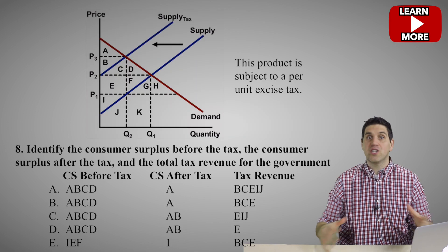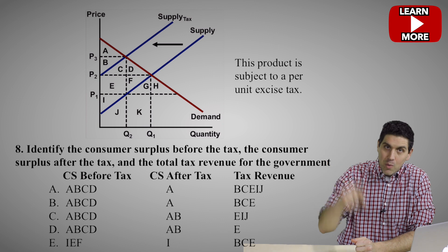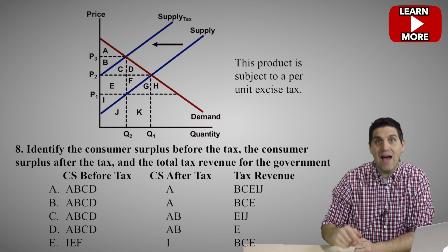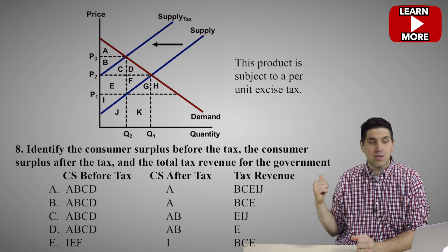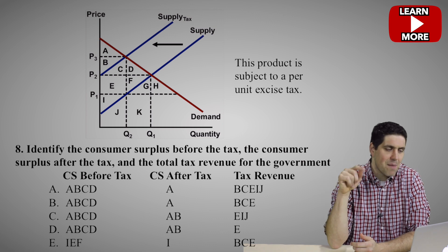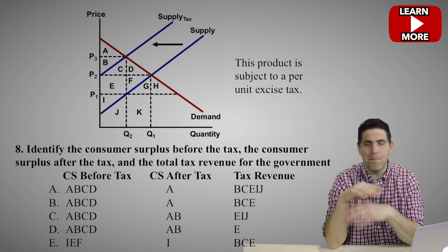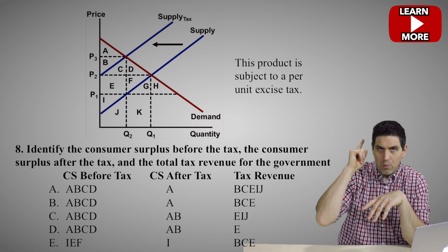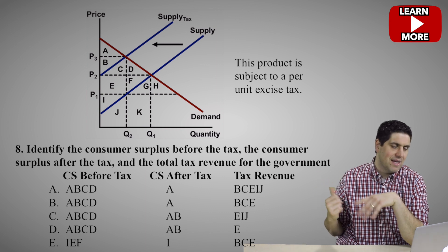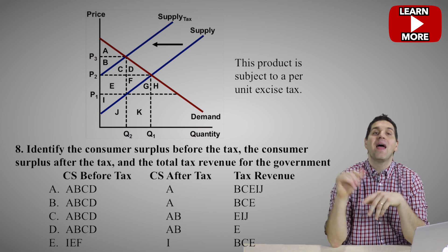Now we have a tax question — putting everything together. What's the consumer surplus before, consumer surplus after, and the total tax revenue? Consumer surplus before is easy: at a regular market, the price is P2. The difference between what people wanted to pay and what they did pay gives areas A, B, C, D. So A, B, C, D is the right answer for consumer surplus before.